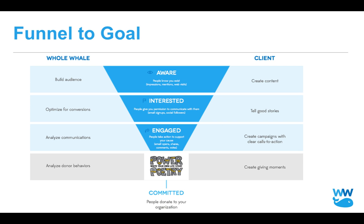Next up, the funnel-to-goal conversion. This is Whole Whale's funnel — you're welcome to copy it. We go from aware, to interested, to engaged, and then a poet. On the aware side, at the top of the funnel, we're creating content — things like 'how to write an ode poem.' We then get them to become interested and engaged, potentially signing up for an email or becoming a user. You can define this for your organization and track it in Google Analytics, making sure they're maybe becoming a donor — creating giving moments once you have permission to talk with them over time. This is how you make the case for why we write content to begin with: we're opening up the top of the funnel so we have more trickle-down toward our business goals.